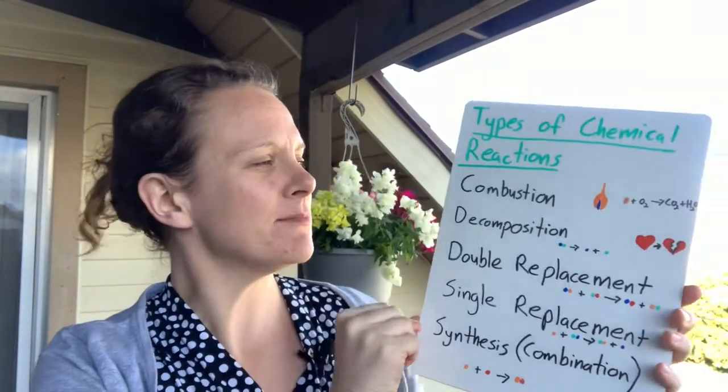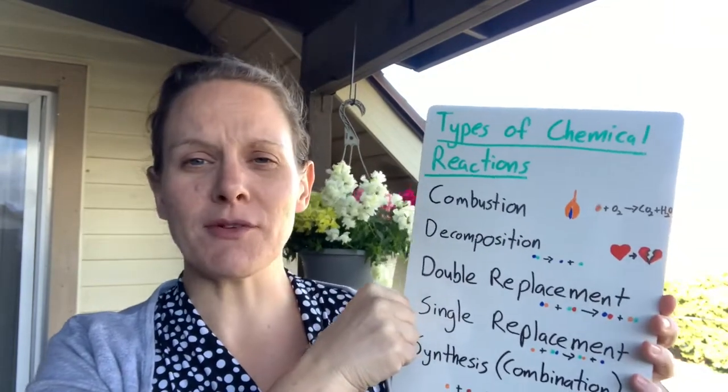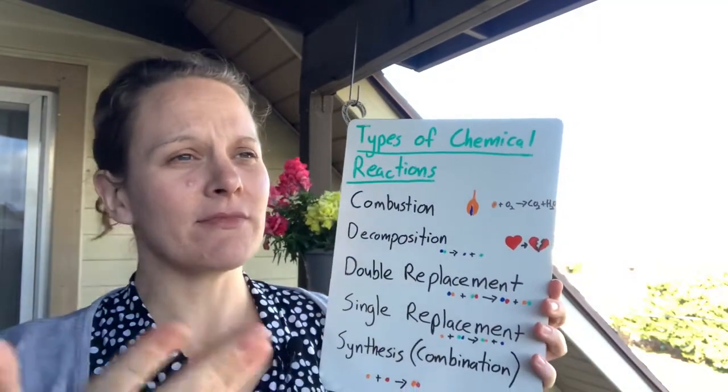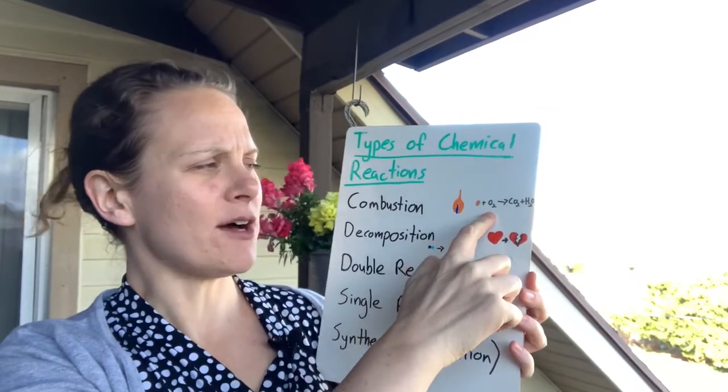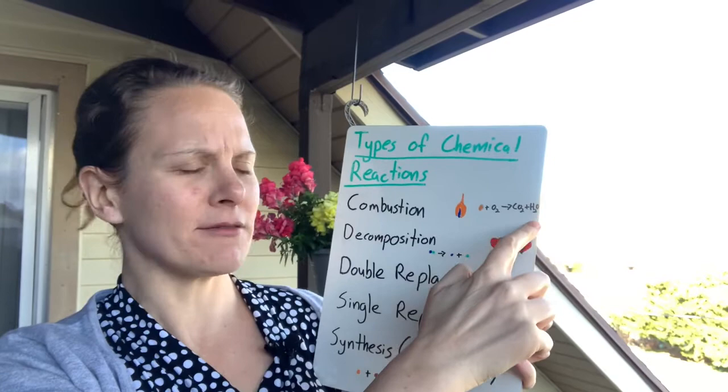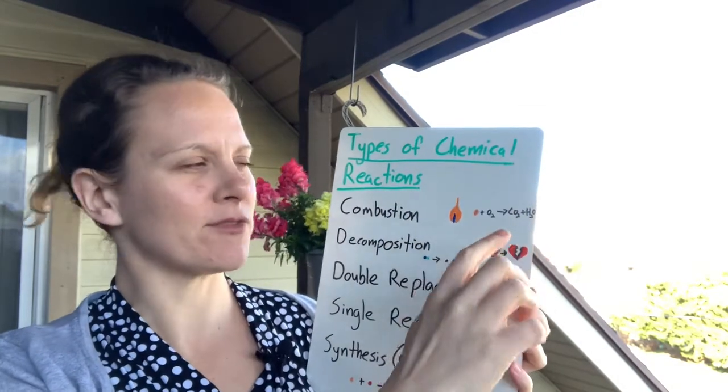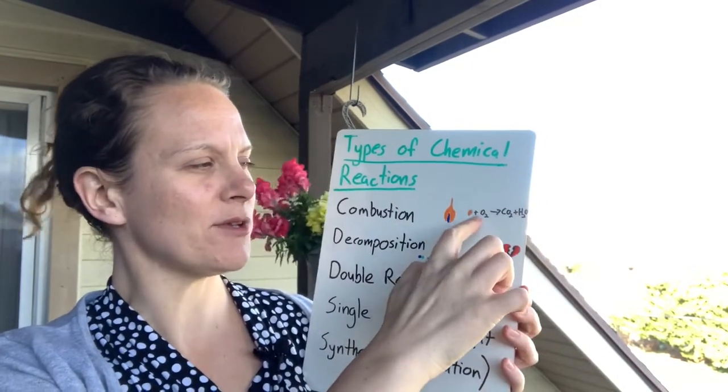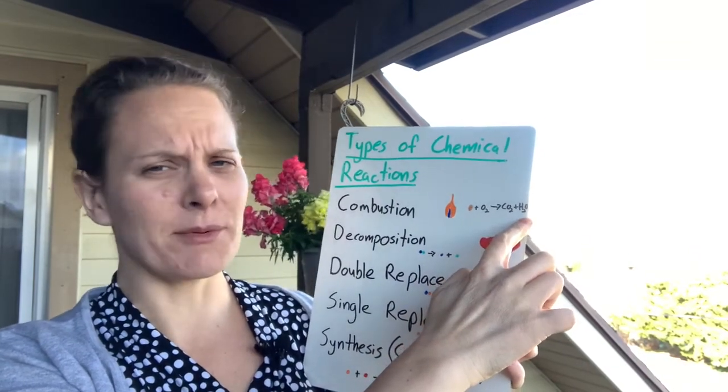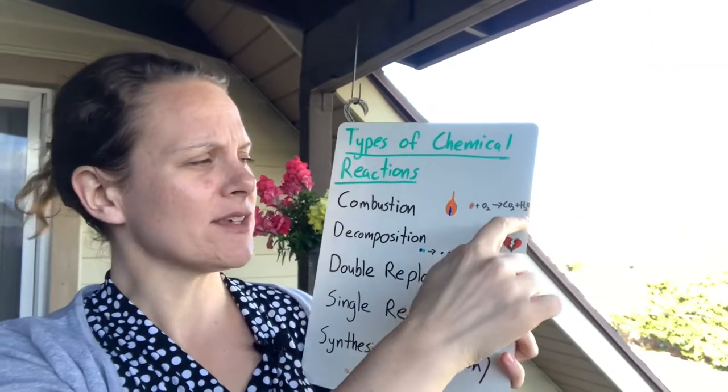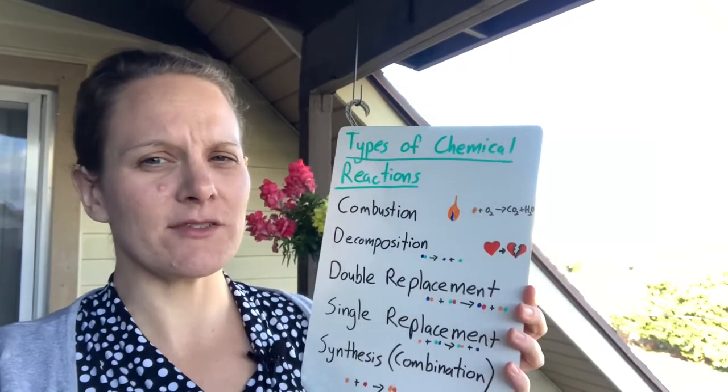First one is combustion. You may have heard of burning before. Combustion can also happen in things like rust, but you have some kind of fuel that reacts with oxygen, creates carbon dioxide and water. When it comes to burning, fuel plus oxygen makes carbon dioxide and water. You may be confused because water puts out fire, but in this case it's water vapor, and there's not very much of it, generally speaking.